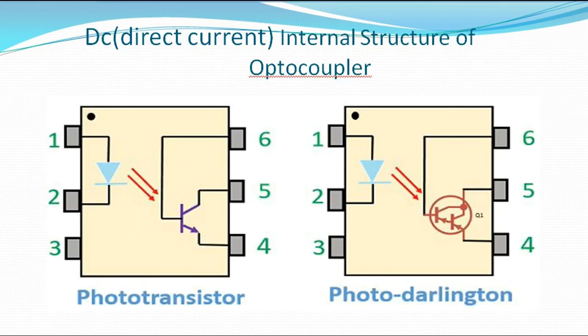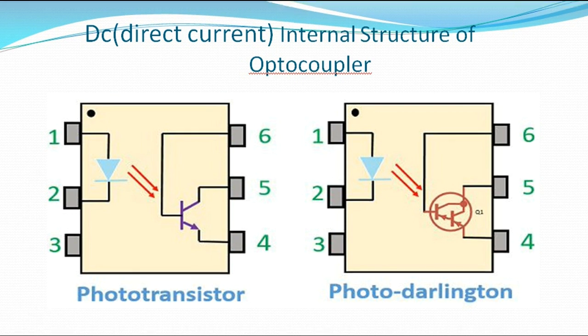This is the DC direct current internal structure of an optocoupler. I am trying to give you the difference between AC and DC. This one is the DC aspect. This one is the phototransistor, while this one is the photodarlington. In that case, this is six legs — you can call it six legs or six pins. This is the internal structure and this is how it has been configured. Here, it's called the photodetector or photosensors. Here, it's called the LED pin — the light emitting diode.